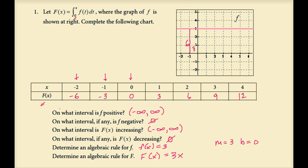Let's plot these values: negative 2 maps to negative 6, negative 1 maps to negative 3, 0 maps to 0, 1 maps to 3, 2 maps to 6. Connecting these dots gives the linear function uppercase F of x equals 3x.